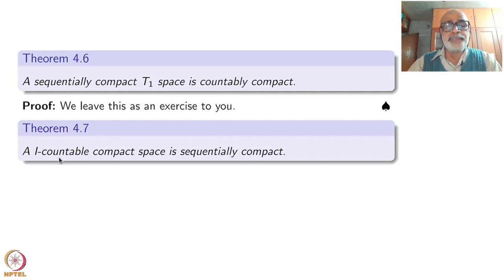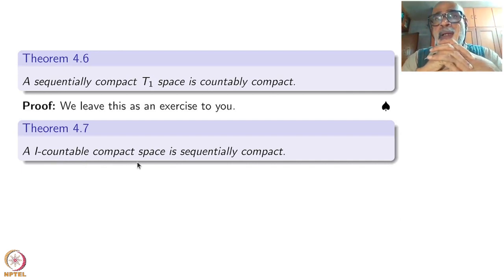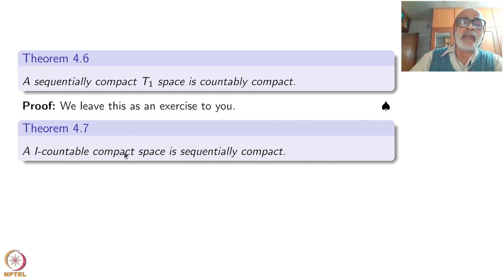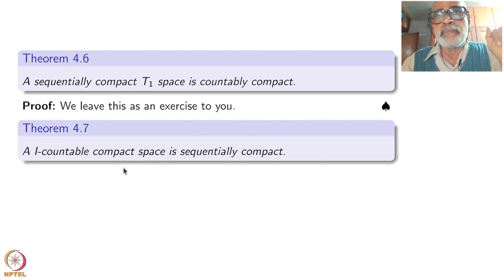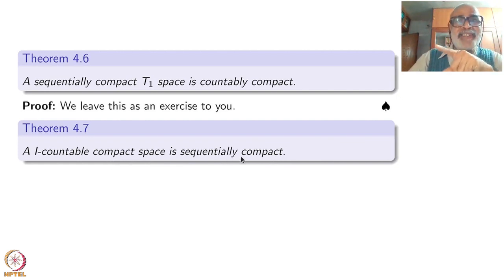The next theorem is: if X is a first countable compact space, then it is sequentially compact. We saw at the beginning that compactness does not imply sequential compactness; however, under first countability, compactness does imply sequential compactness. This may be the reason why compact metric spaces are sequentially compact — metric spaces are always first countable.